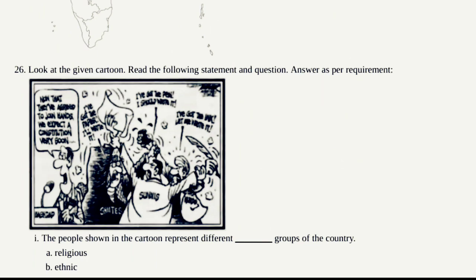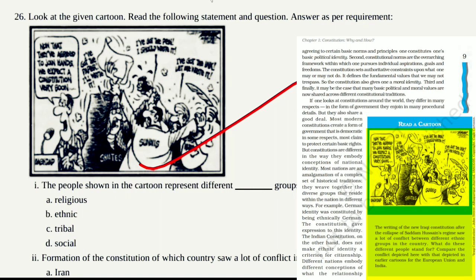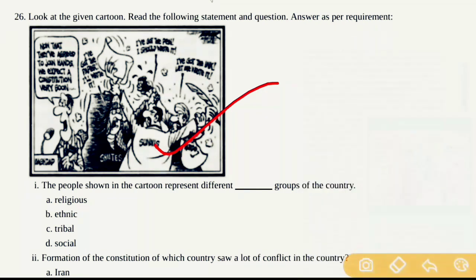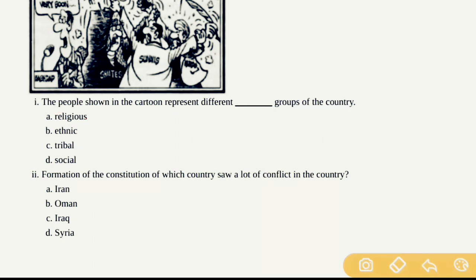Now let's move to Question Number 26, which is a cartoon-based question. The cartoon is from the first textbook — Indian Constitution at Work, Chapter 1: Constitution Why and How, page number 9. The first question: the people shown in the cartoon represent different groups of the country. The correct answer is option B — ethnic — meaning every person in the cartoon represents a different ethnic group of the country.